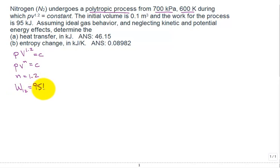Work 1 to 2 is 95 kilojoules. Let me put a table together with state, initial state 1 and final state 2, pressure in kPa at 700, temperature in Kelvin at 600, and volume in meter cubed at 0.1. We're assuming ideal gas behavior and neglecting kinetic and potential energy effects. We're asked to find the heat transfer Q from 1 to 2.